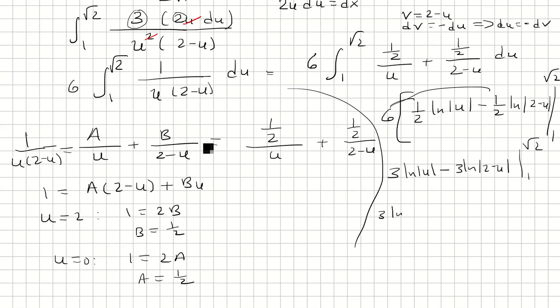So we have 3 ln of root 2 minus 3 ln of 2 minus root 2, minus 3 ln of 1 minus 3 ln of 1. So this is just 0. ln of 1 is just 0, so we don't care about that.